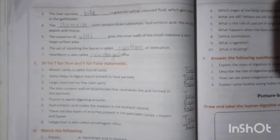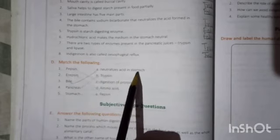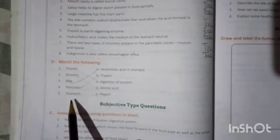Now, indigestion is also called esophageal reflux. This is true. This indigestion also has a symptom, heartburn. So this is also called esophageal reflux. Now, match the following. The first one is pepsin. C. Digestion of protein. Erypsin. D. Amino acid. 3. Bile neutralizes acid in stomach. A1. Pancreas B. Trypsin. And pancreas secretes the enzyme trypsin. And stomach pepsin. Okay? So these are the answers of objective type questions.